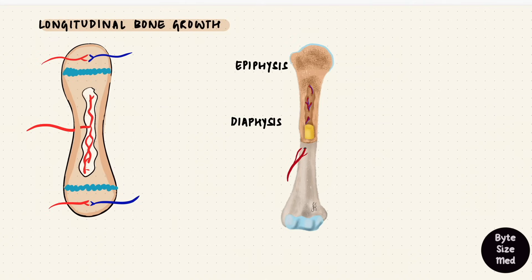Once that bone has reached its final length, by then the cartilage stops proliferating. Thus destruction is more and bone replaces cartilage, leaving behind that growth plate as an epiphyseal line. The primary and secondary centers of ossification have fused. Now bone can no longer grow.